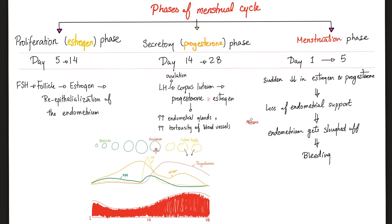After day 28, estrogen levels fall sharply and progesterone drops as well. The endometrium sheds — called menstruation — and the unfertilized ovum drops with the menstrual blood. The cycle repeats every 28 days on average.